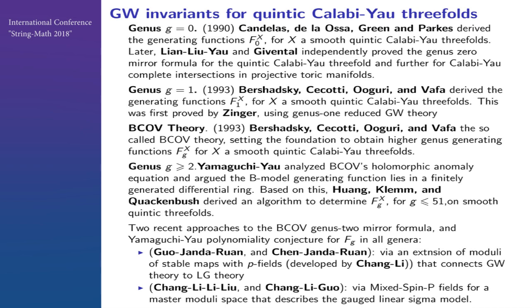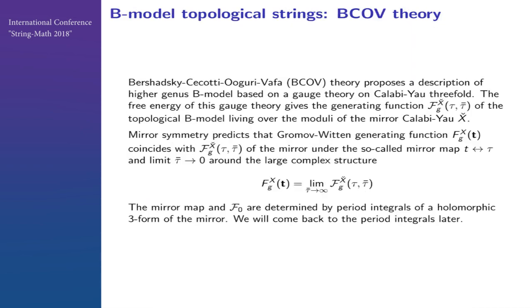This becomes useful because in the last few years, several groups of people were able to implement this holomorphic anomaly equation conjecture and were able to actually prove things. Only after you simplified the mathematical formulation can you add the proof.